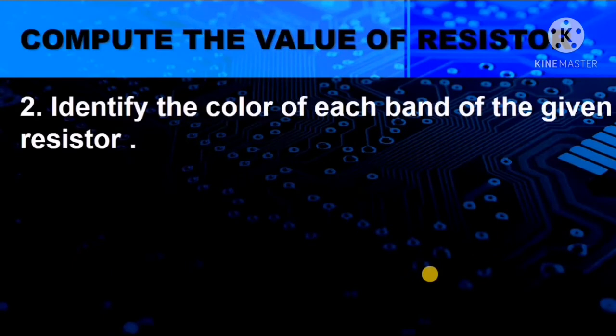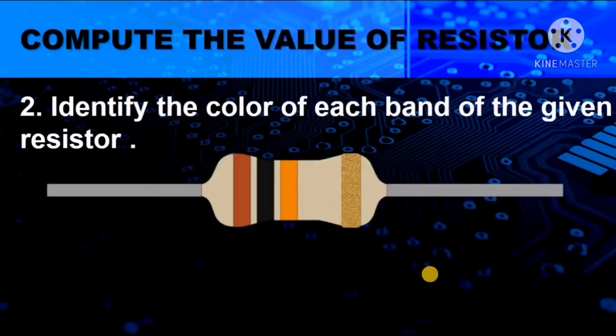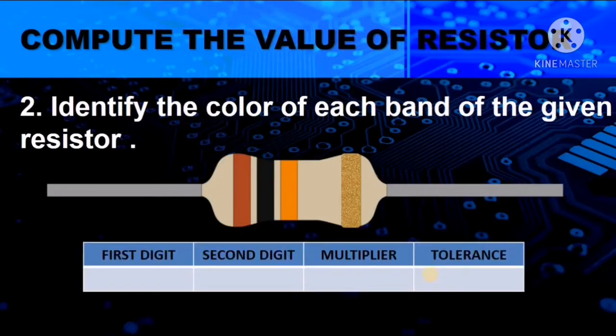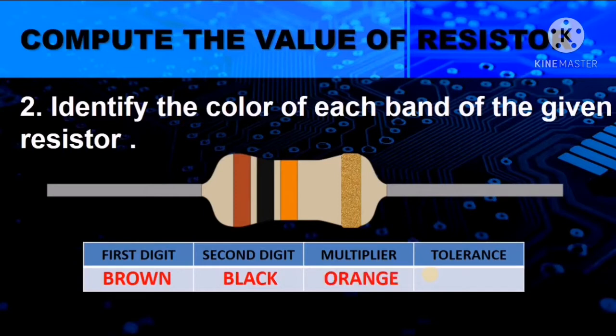Next, identify the color of each band of the given resistor. Using the example, you have to identify the color for the first, the second, and for the third, or the multiplier. And we all know the color for the tolerance. So, the first color is brown, the second color is black, the third color is orange, and lastly, gold as the tolerance, or the fourth color.